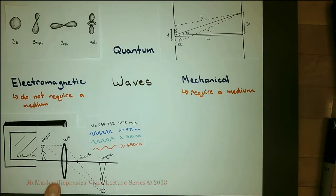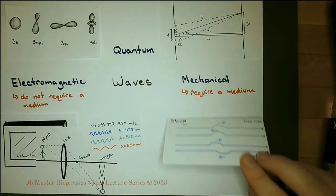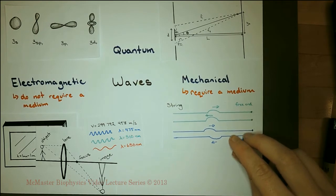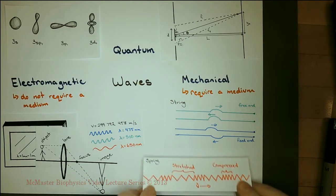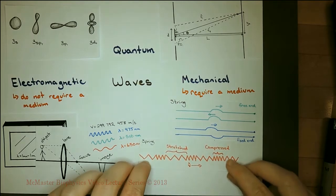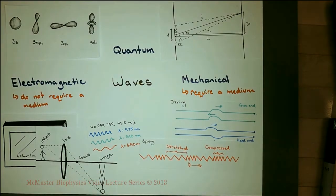Within mechanical waves, there are transverse waves, which cause the particles to move perpendicular to the wave direction, such as in a wave on a string. There are also longitudinal waves, which cause the particles to move parallel to the wave direction, such as the wave on this spring.